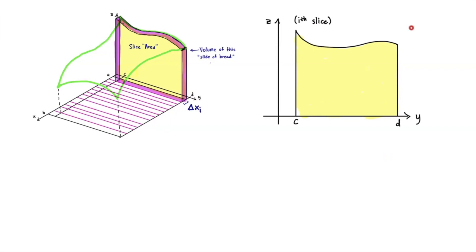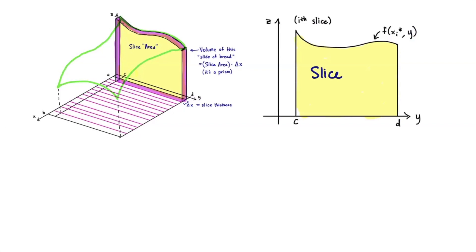The area of the face is shown in the picture on the right. Imagine the positive x-axis is pointing straight at your eye, so you're only looking down at the yz-plane. Our y-coordinates go from c all the way to d, because we didn't slice perpendicular to the y-axis. The value of this function from y = c to y = d is given by this curve. If we've picked some representative point xᵢ*, this curve is exactly what you get if you fix the x-coordinate and let y go from c to d. Viewed like this, what we're looking at is just a function of one variable, and our slice area is the area under the graph of that curve.